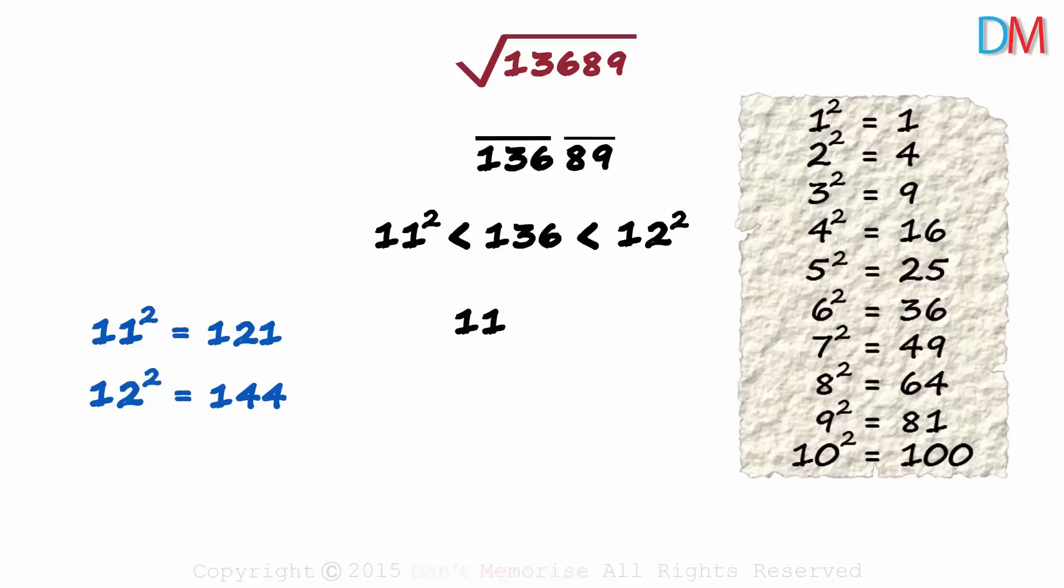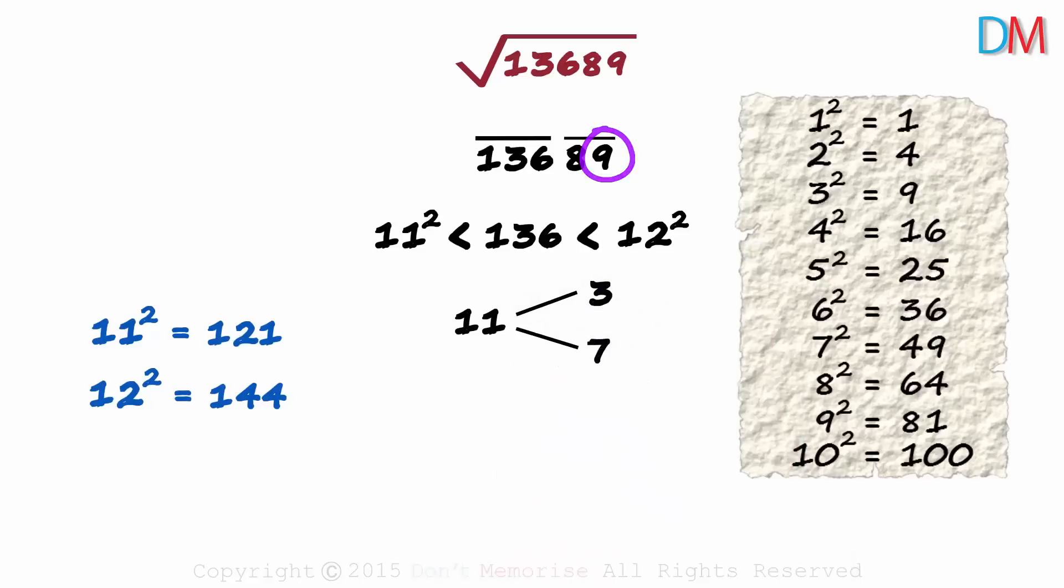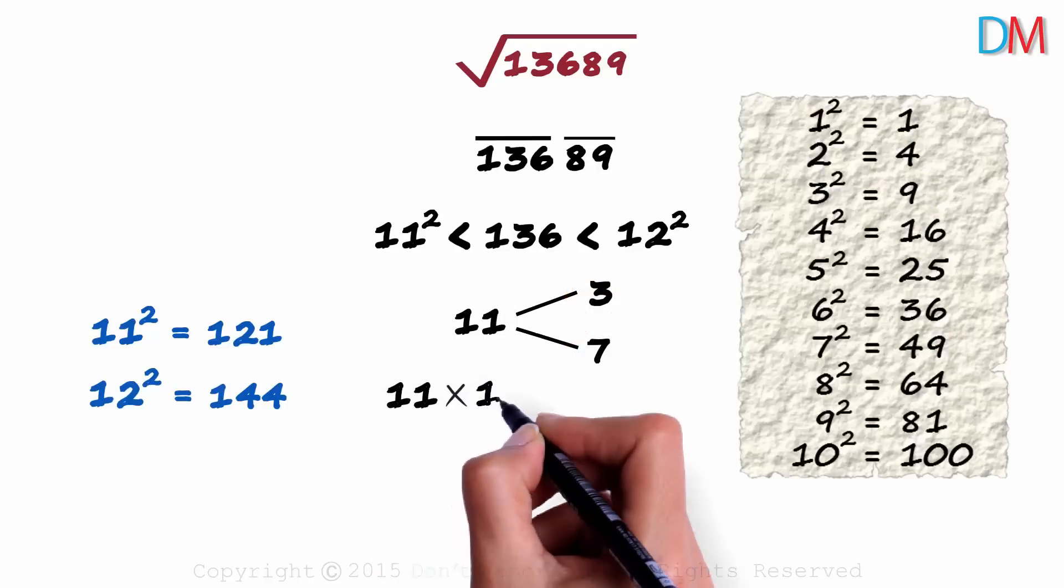Now the units digit of the number is 9. It means that the units digit of its square root will either be 3 or 7. 3 times 3 is 9 and 7 times 7 gives us the units digit as 9. To know which of these two will be in the units digit, we multiply 11 with its successor. 11 times 12.